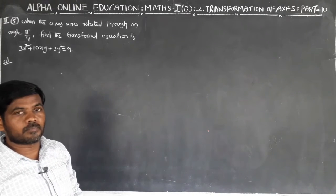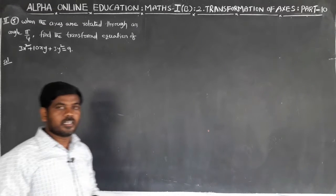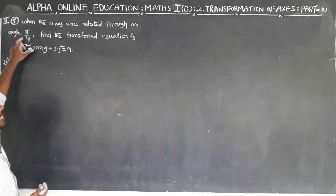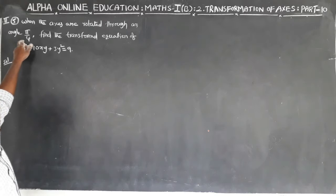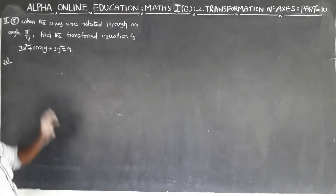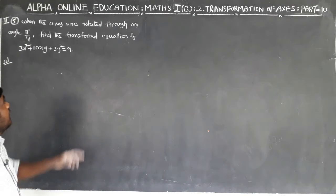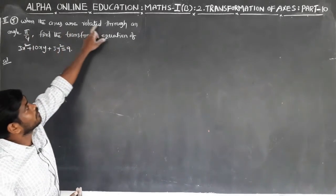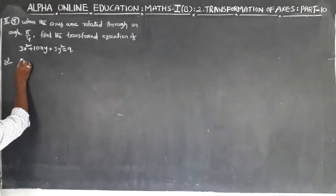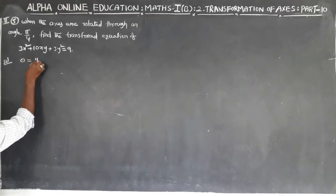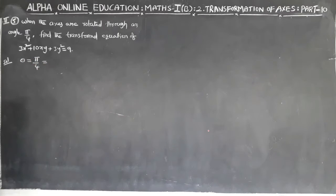This is the problem on rotation of axis. The axes are rotated through an angle, where theta equals π/4 radians, which means 45 degrees.